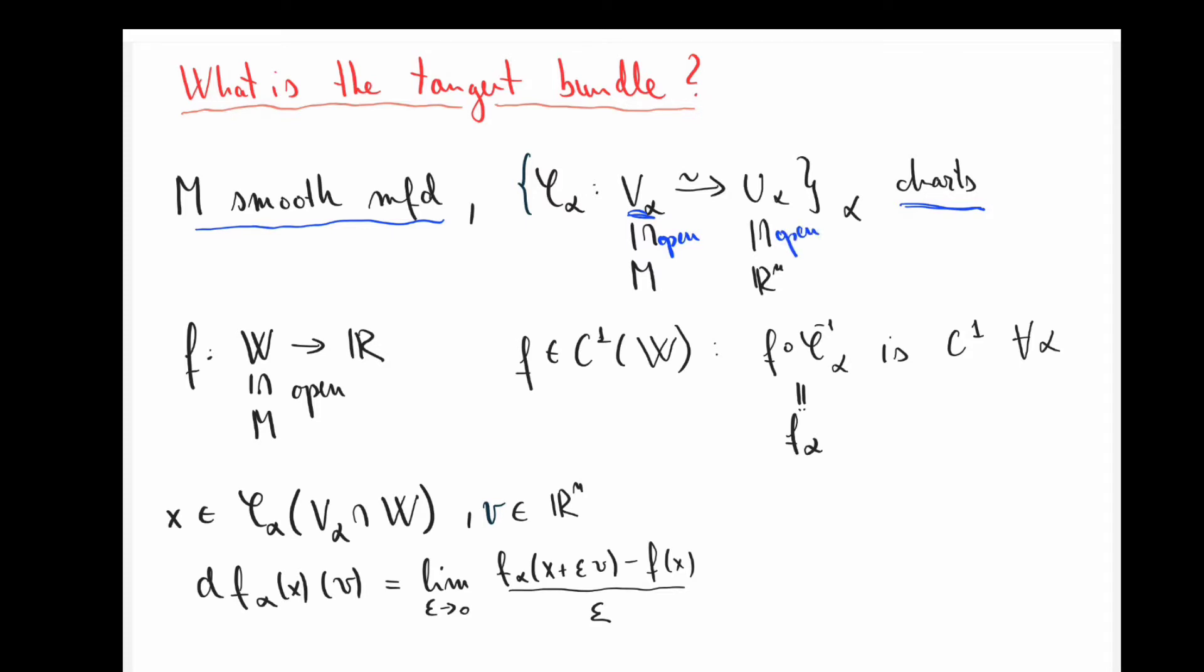And we want to do calculus. So we start with a function f defined on an open subset of M going into R. And then we know what f being in C¹ means. It simply means that when I compose f with the parametrizations coming from phi alpha, then I get C¹ functions as you learned them from calculus. These functions here will be defined from open parts of r to the n going into r. So it makes complete sense to ask them to be C¹.